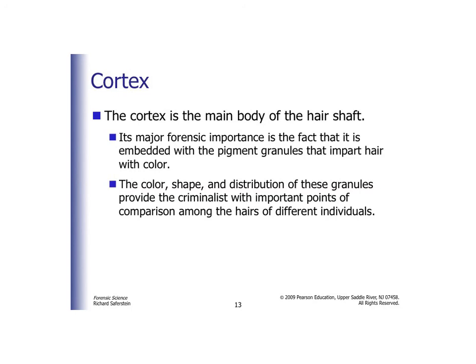Now we're going to talk about the cortex — that's the bulk, the main body portion of the hair shaft. Its major importance is that that's where the pigment is, which is why it gives the hair its normal color. The distribution and shape of these pigments can be used for comparison between different individuals. So maybe two hairs are both red, but the pigmentation is distributed differently, making them consistent or inconsistent with the suspect or victim.